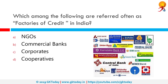Which among the following are referred to often as factories of credit in India? The correct answer is commercial banks. A commercial bank creates credit when it buys securities and pays the seller with its own cheque. The cheque is deposited in some bank and a deposit is created for the seller of securities — this is also called credit creation. As a result, money supply in the economy becomes higher. It is because of this credit creation power that commercial banks are called factories of credit or manufactory of money.